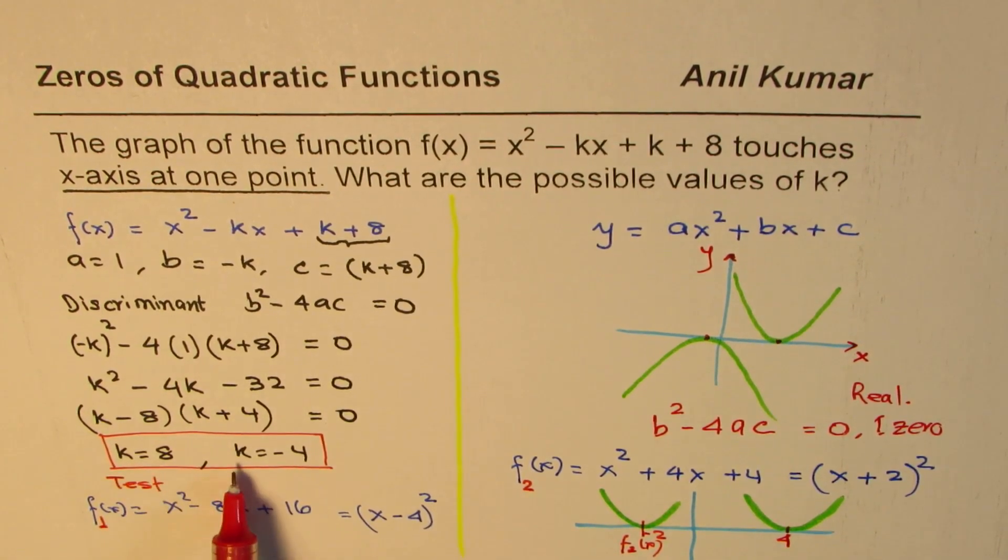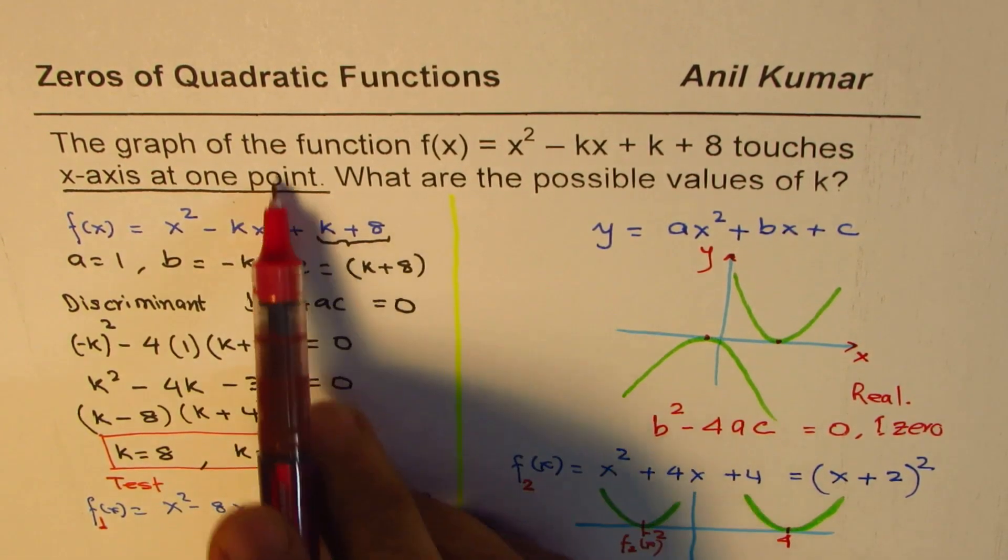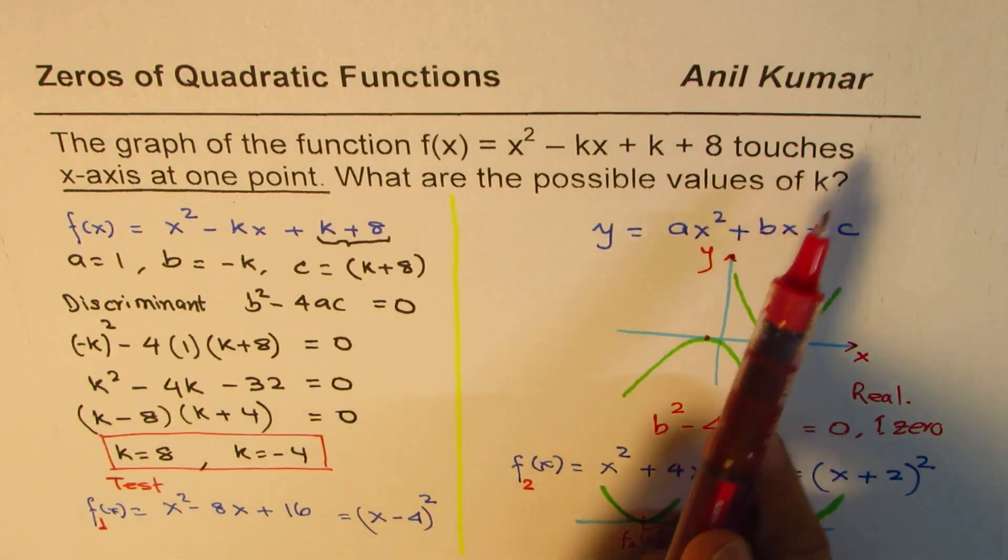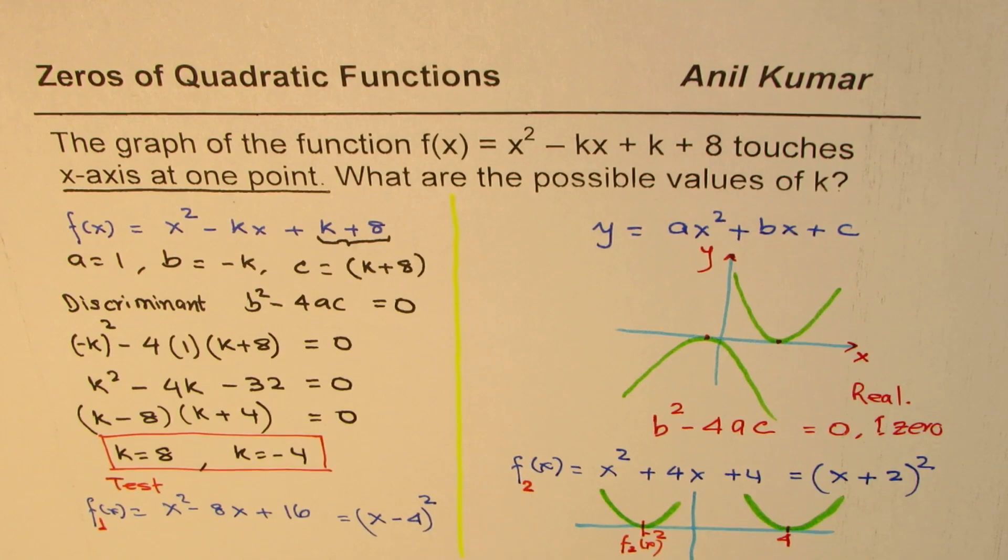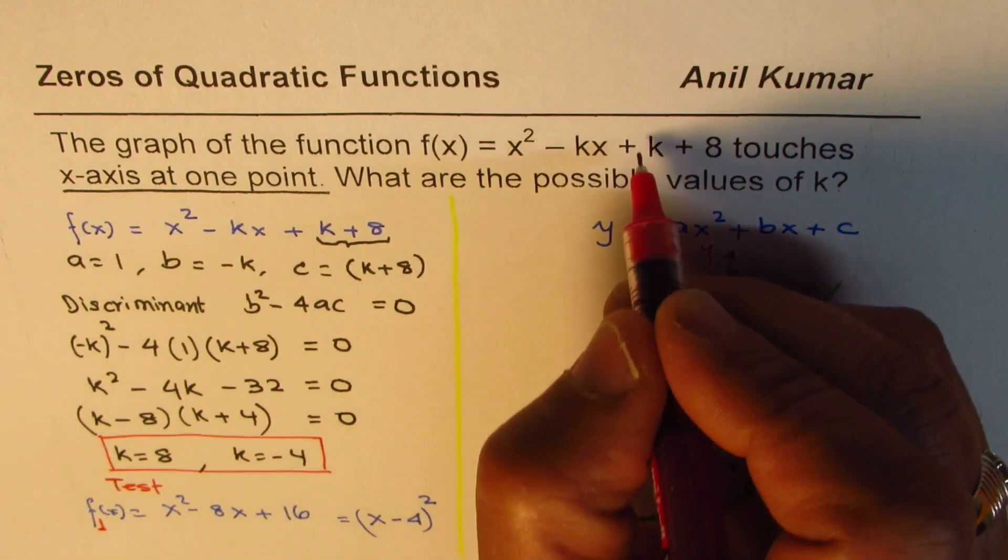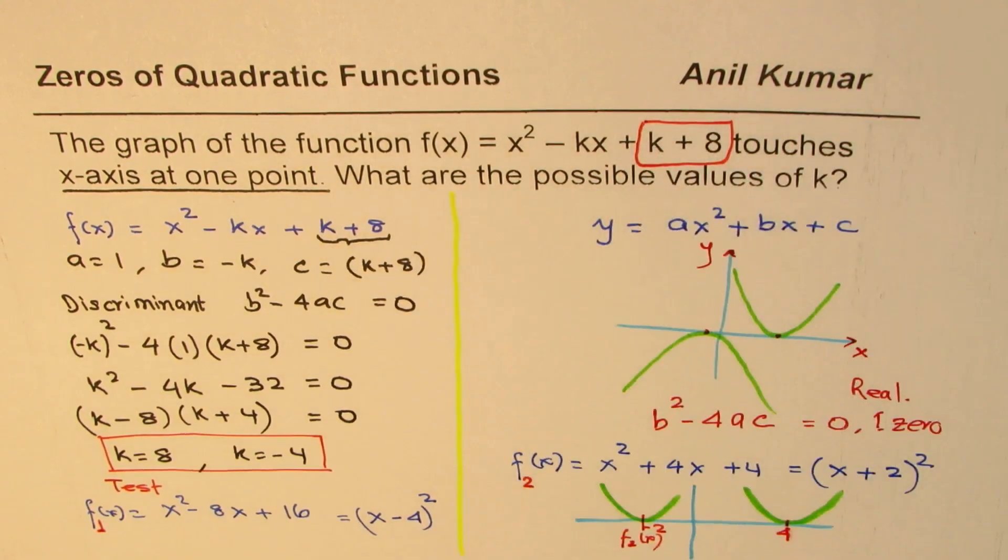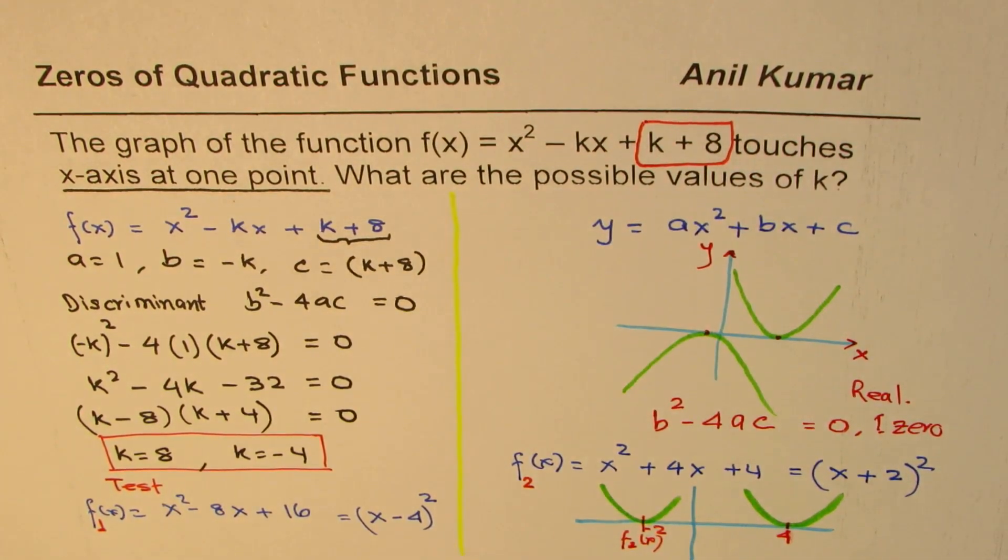for k equals to 8 and k equals to minus 4, the graph of the given function touches x-axes at one point. So I hope you understand the whole concept. Key here is to treat this number as c, k plus 8 is a constant. So once you do that, I hope you get the right answer.